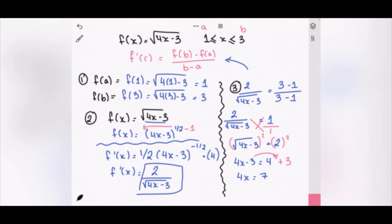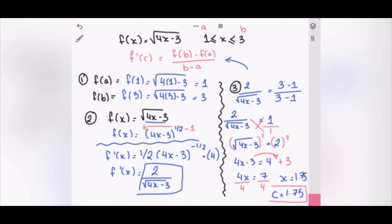Dividing both sides by 4 gives x = 1.75. So c = 1.75. We check that 1.75 is between 1 and 3, and it is, so our answer is correct.